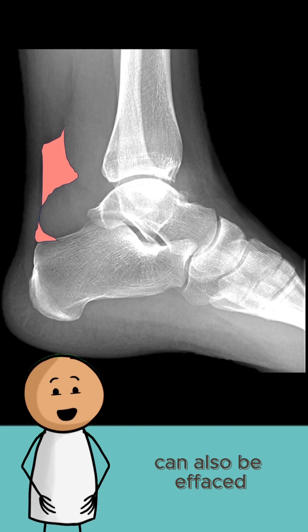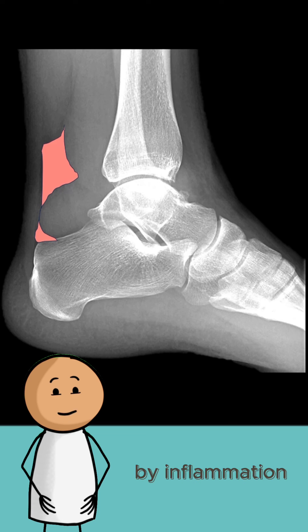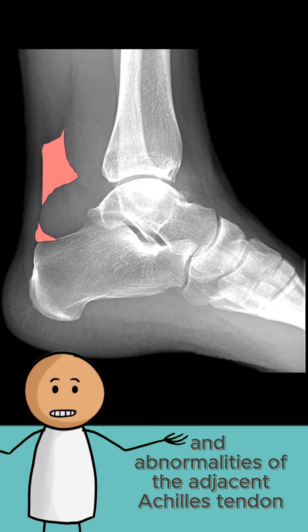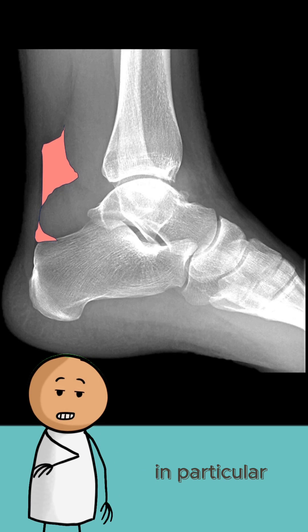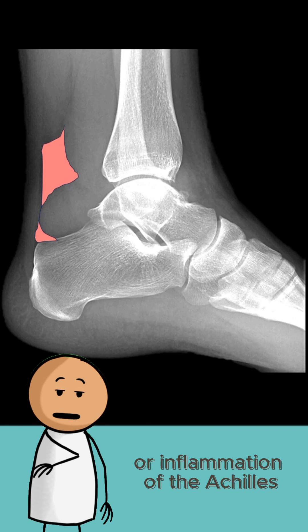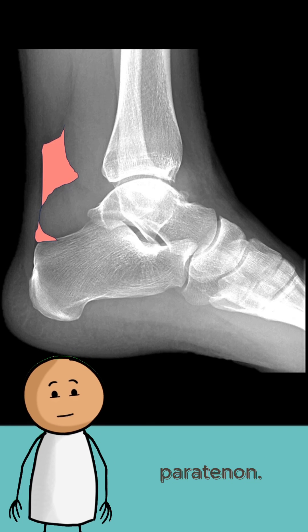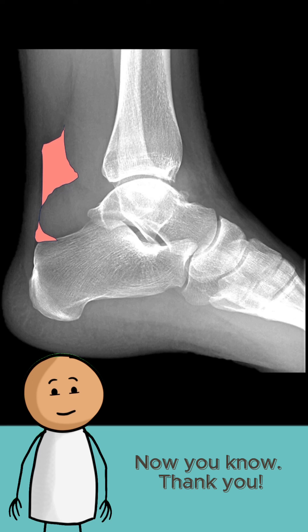Keep in mind that the Kager's fat pad can also be effaced by inflammation and abnormalities of the adjacent Achilles tendon, in particular paratendinitis, or inflammation of the Achilles paratenon. Now you know.